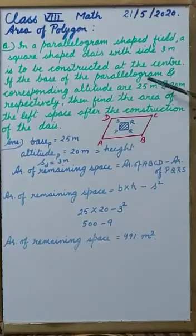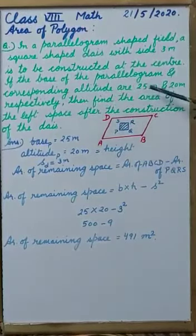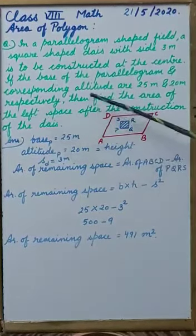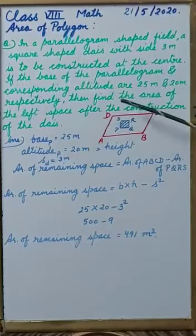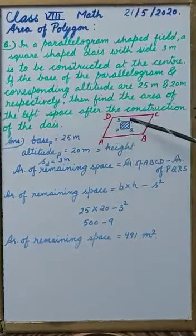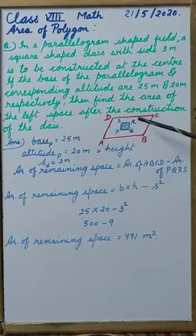And here, base and corresponding altitude of parallelogram are given 25 meter and 20 meter respectively. Then we have to find the area of left space after the construction of base.